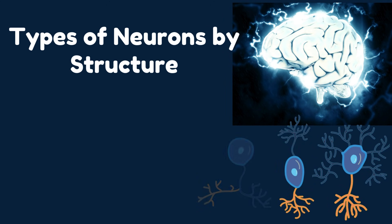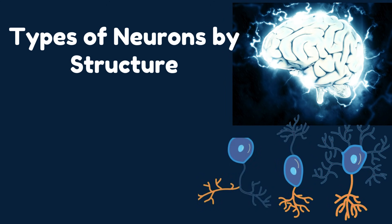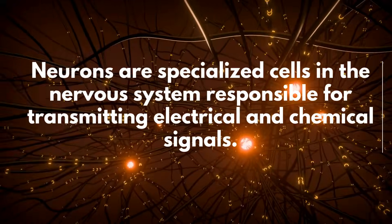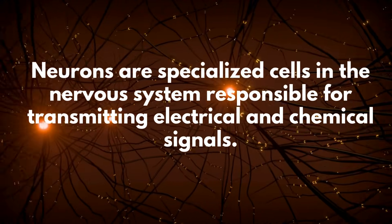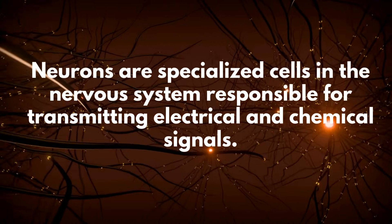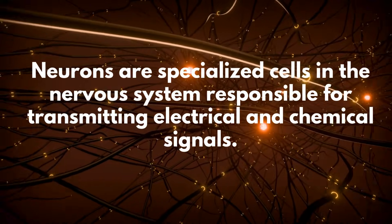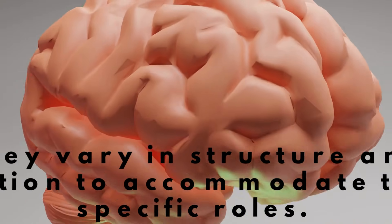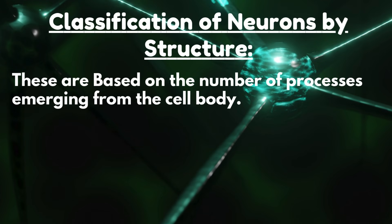In this video, we will discuss types of neurons by structure: unipolar neurons, bipolar neurons, and multipolar neurons. Neurons are specialized cells in the nervous system responsible for transmitting electrical and chemical signals. They vary in structure and function to accommodate their specific roles. Structural classification of neurons is based on the number of processes emerging from the cell body.